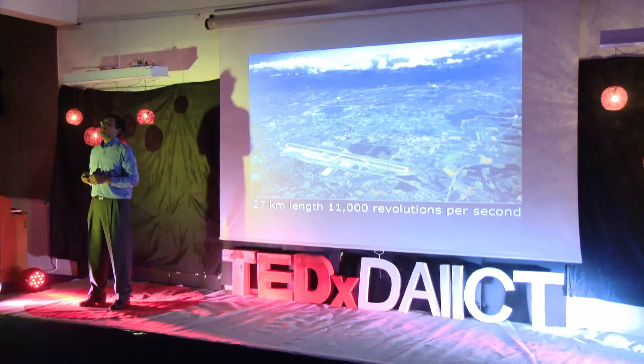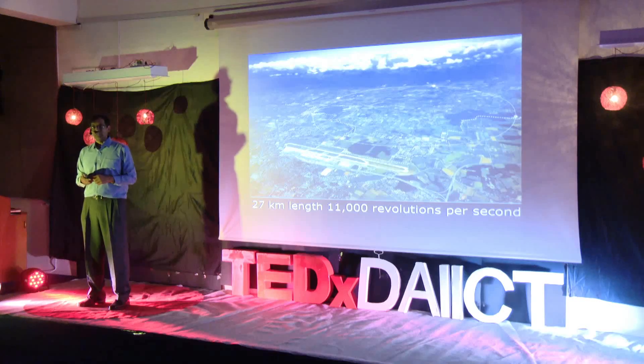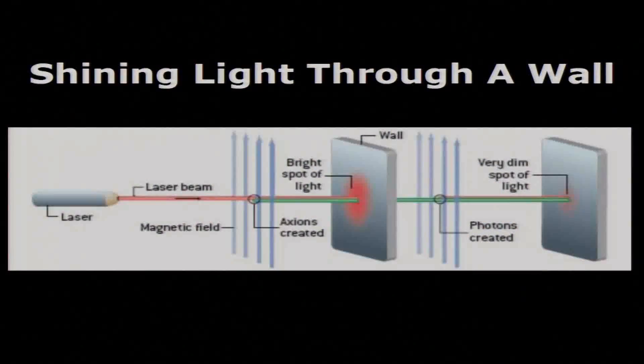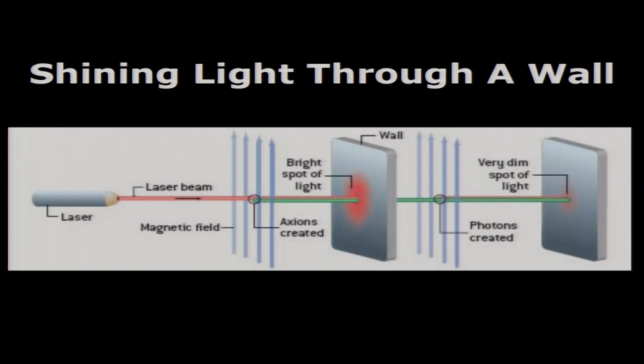One such particle is called the axion, actually named after a washing powder — we scientists are very creative. The axion is a light particle, much lighter than the proton, that interacts with electromagnetic radiation and with electric and magnetic fields, but extremely feebly. A very clever experiment to look for the axion is called the shining light through a wall experiment.